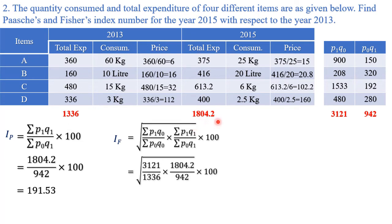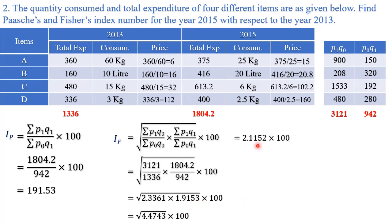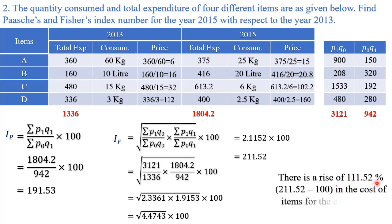Putting in the values: √[(3121 / 1336) × (1804.2 / 942)] × 100. Divide each pair individually, multiply those results, take the square root, then multiply by 100 to get 211.52. Statement: there is a rise of 211.52% — actually 111.52% above base — in the cost of items for the current year compared to the base year.